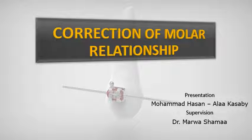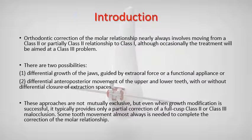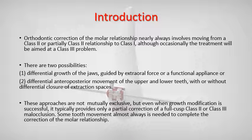Correction of molar relationship includes differential growth in adolescent Class 2 treatment, Class 2 correction by distal movement of the upper molars, differential anterior-posterior tooth movement using extraction spaces, molar correction with inter-arch elastics, and Class 3 camouflage. Orthodontic correction of the molar relationship nearly always involves moving from a Class 2 or partial Class 2 relationship to Class 1, although occasionally treatment will be aimed at Class 3 problems.